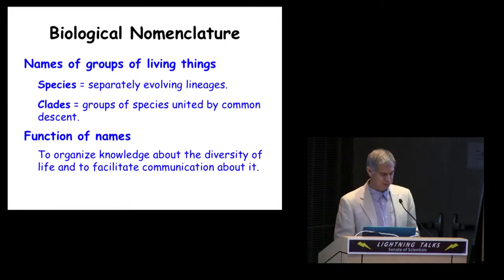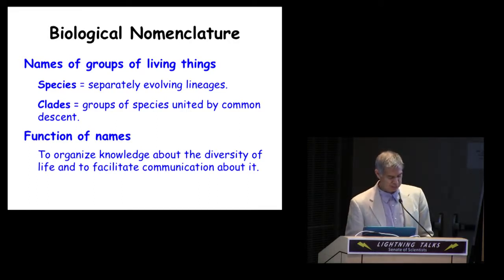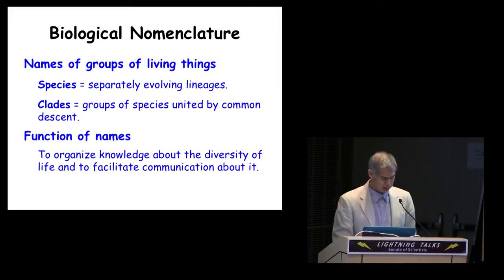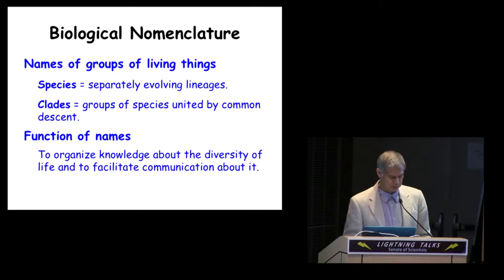Biological nomenclature is the discipline concerned with the names of groups of living things, and in modern biology those groups are species, separately evolving lineages, and clades, groups of species united by common descent. Biologists give names to the various clades and species to organize our knowledge about the diversity of life and to facilitate communication about it.